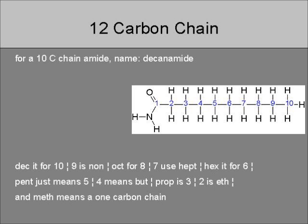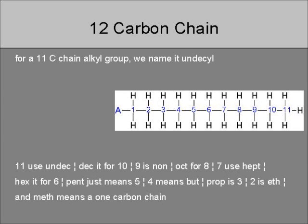For a ten carbon chain amide, we name it decanamide. Dec is for ten. Nine is non, oct is for eight. Seven uses hept, hex is for six. Pent just means five. Four means but, prop is three, two is eth, and meth means a one carbon chain.